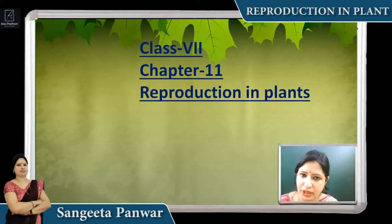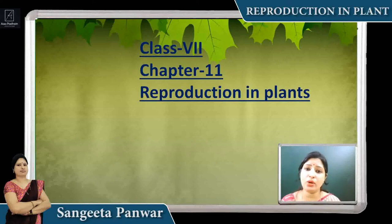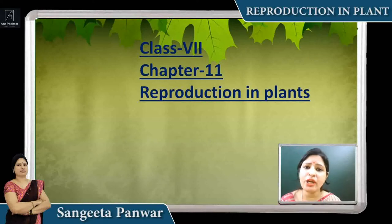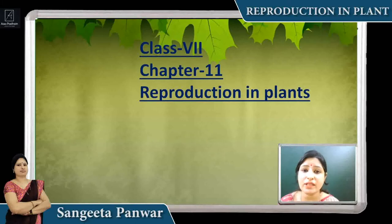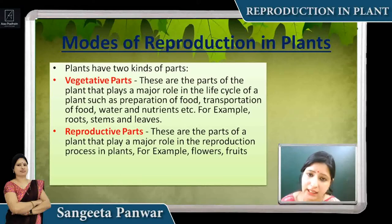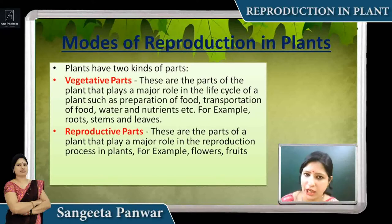The first question that may arise is: what is reproduction, and why is reproduction necessary? Reproduction is the process by which animals and plant organisms produce their same kind of young ones. Reproduction is necessary to maintain any species, because old plants will die, and if new plants don't grow, their species will gradually become extinct. So to preserve their existence and maintain the number of species and variety, we need reproduction.